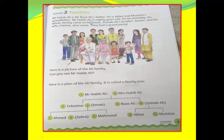Now look at this paragraph. We are talking about Mr. Habib Ali. That day was his birthday and he was 80 years old. On his birthday, his whole family came. But there are also two guests: Anwar and his wife Fatima. Anwar is the brother of Zainab Ali, and Fatima is Anwar's wife. They also came to his house and they had a grand party.